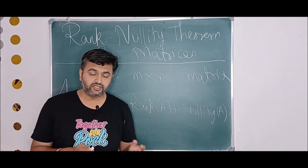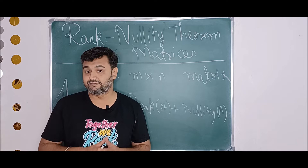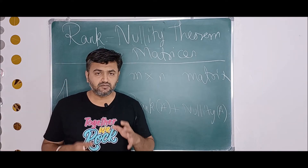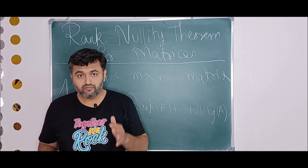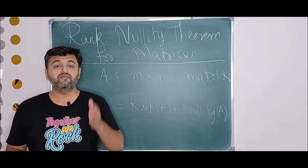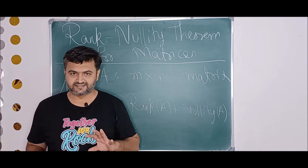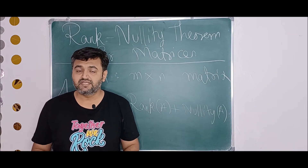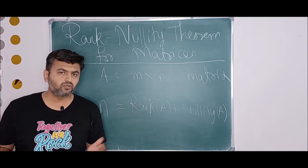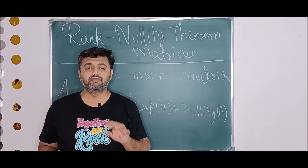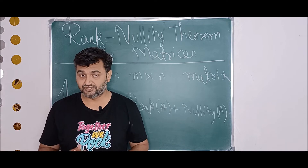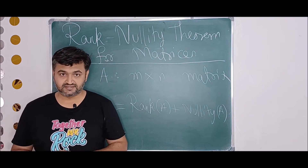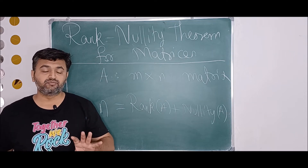Rank of a matrix I have already talked about in my earlier lecture — the link is in the description for a detailed explanation — but here for completeness, let me recall. Rank is the maximum number of linearly independent rows, or equivalently the maximum number of linearly independent columns. Both numbers are the same, and this number is called the rank of a matrix.